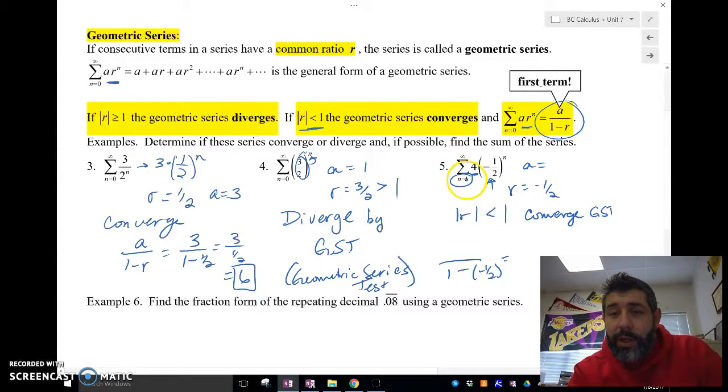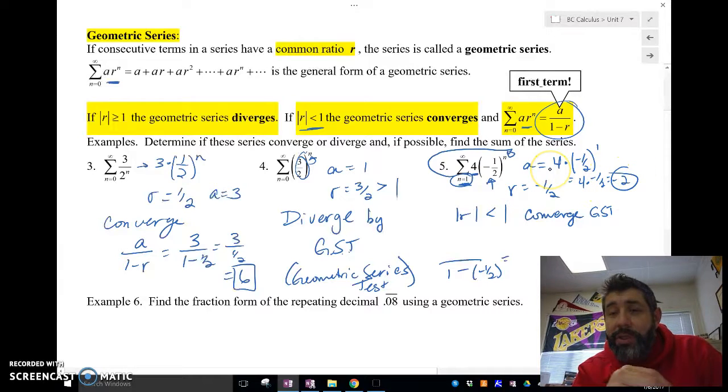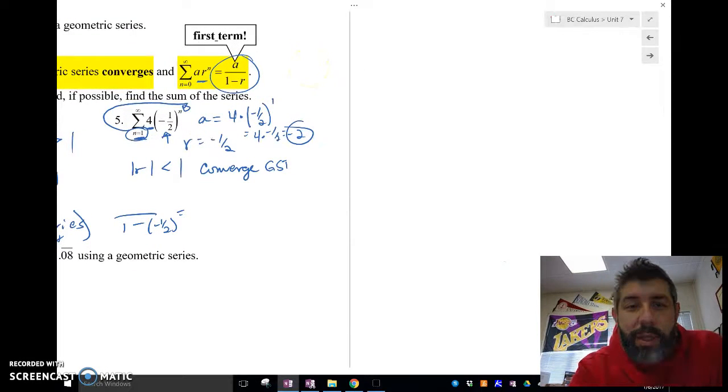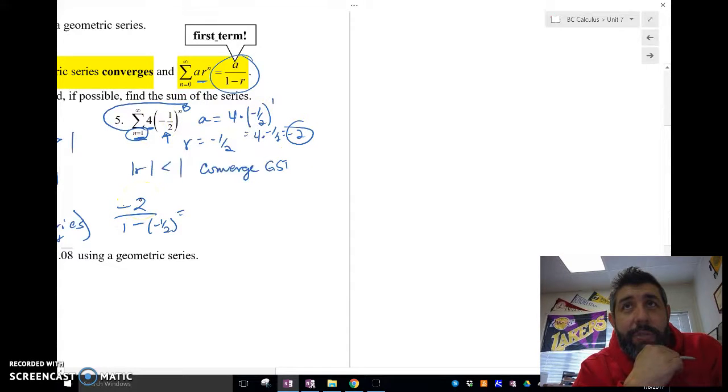I got to plug in n equals 1. So I got to plug that in here. 4 times negative 1 half to the 1 power. That's going to be 4 times negative 1 half, which is negative 2. Negative 2 is a. I'm sorry if you can't see that. I'll move it over here. My face might be in the way. I always forget that it comes out a little bigger than I expect. So I got to plug in this 1 in here. I get negative 2. So actually, my a, my first term is negative 2. So I have negative 2 over 3 halves, which is going to be negative 4 thirds. And that's what it's going to converge to.